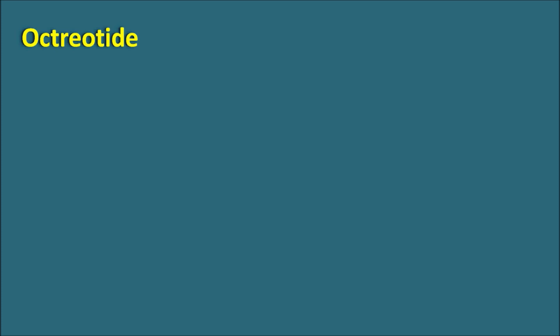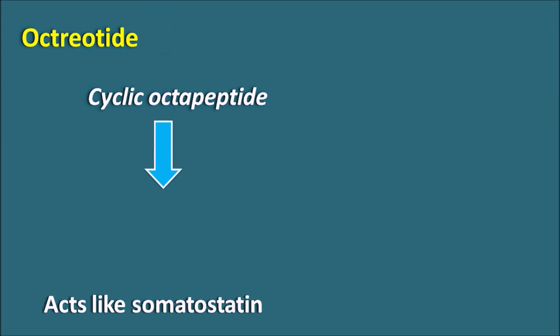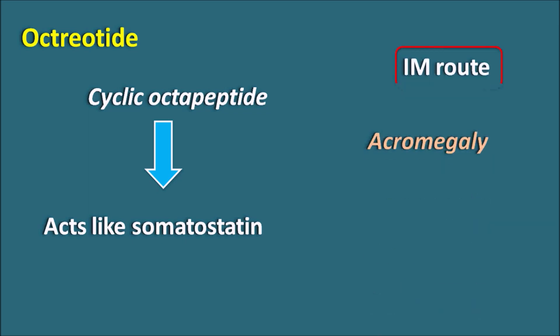The next one is octreotide. Octreotide is a cyclic octapeptide — hence the name starting with 'octa.' It acts like somatostatin and binds to somatostatin receptors, thereby inhibiting the release of growth hormone. This drug is given by intramuscular route. Octreotide can be used in the treatment of acromegaly, where growth hormone is excessively released. It can also be given in carcinoid tumors where epithelial cell proliferation produces skin flushing, and in vasoactive intestinal peptidomas.